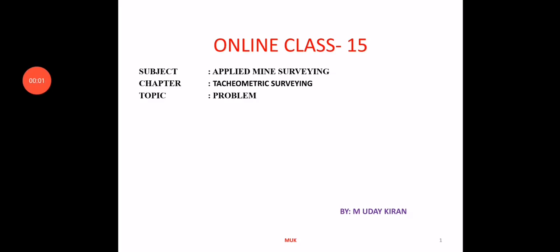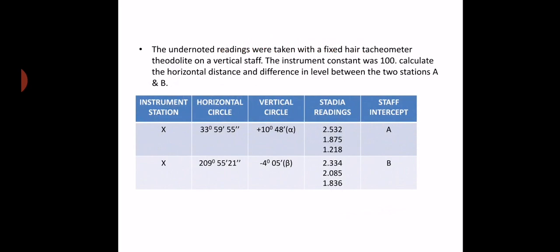Hi everyone, welcome to online survey class 15. In this I'll be discussing a problem related to tachometric surveying. The following readings were taken with a fixed hair tachometric theodolite on a vertical staff. The instrument constant was 100. Calculate the horizontal distance and difference in elevation between two points, station A and B.